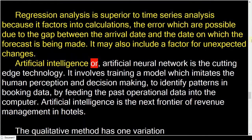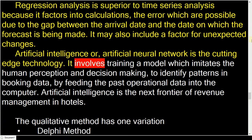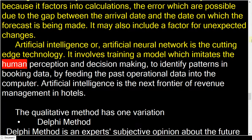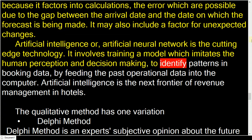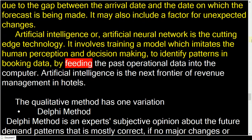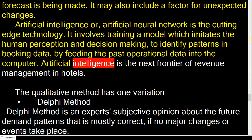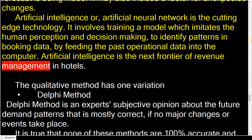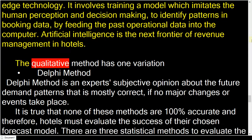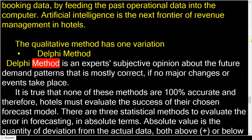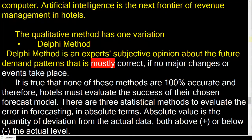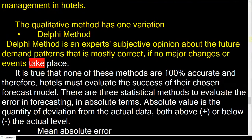Artificial Intelligence, or Artificial Neural Network, is the cutting-edge technology. It involves training a model which imitates human perception and decision-making to identify patterns in booking data by feeding past operational data into the computer. Artificial Intelligence is the next frontier of revenue management in hotels. The qualitative method has one variation: the Delphi Method, which is an expert's subjective opinion about future demand patterns — mostly correct if no major changes or events take place.